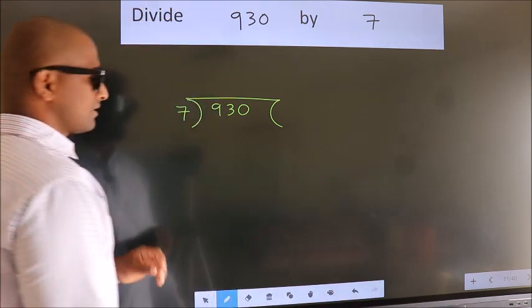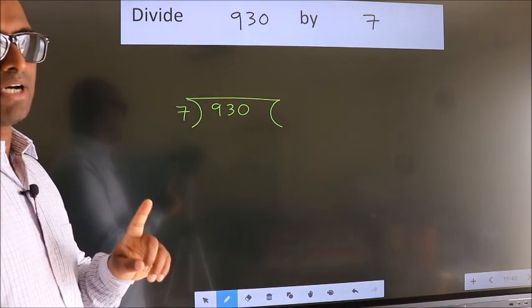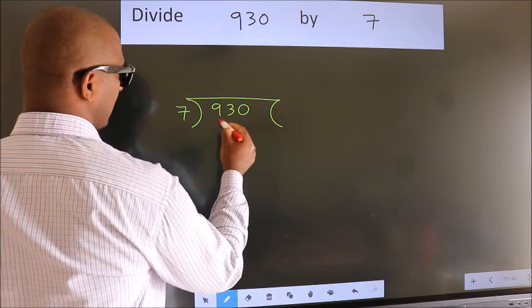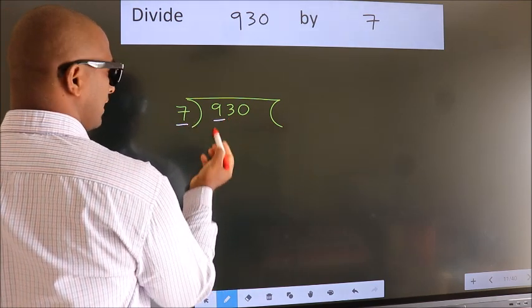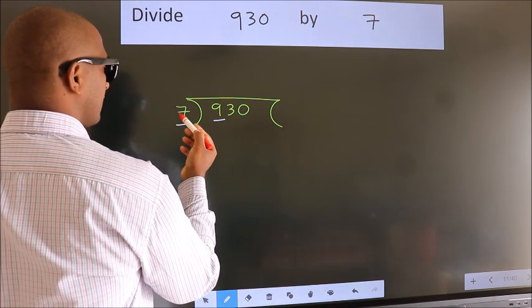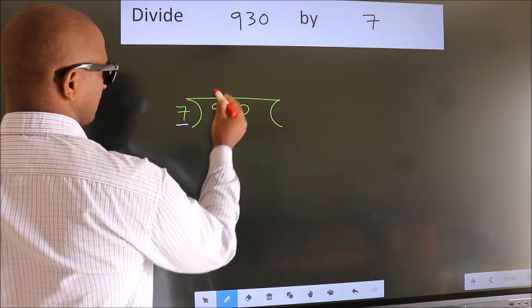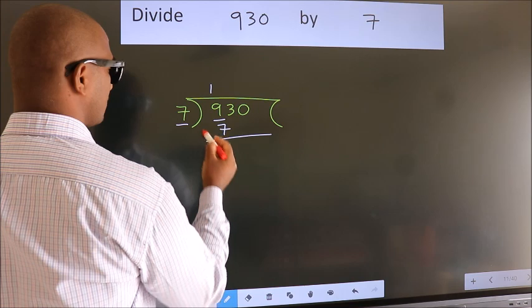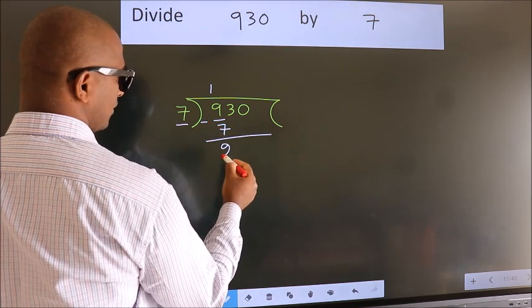This is your step 1. Next. Here we have 9, here 7. A number close to 9 in the 7 table is 7 once, which is 7. Now we should subtract. We get 2.